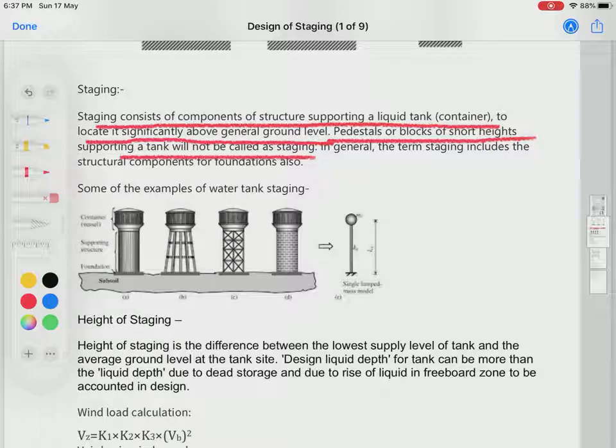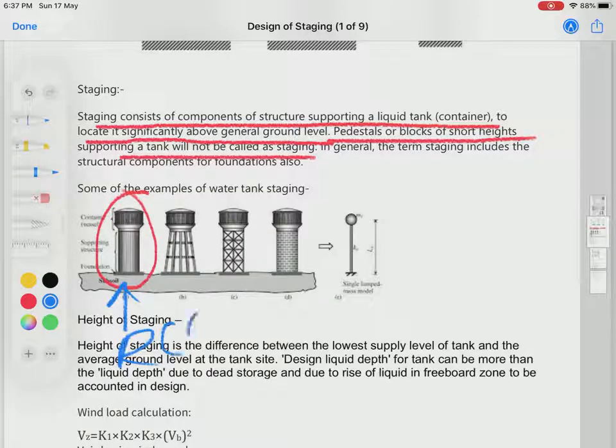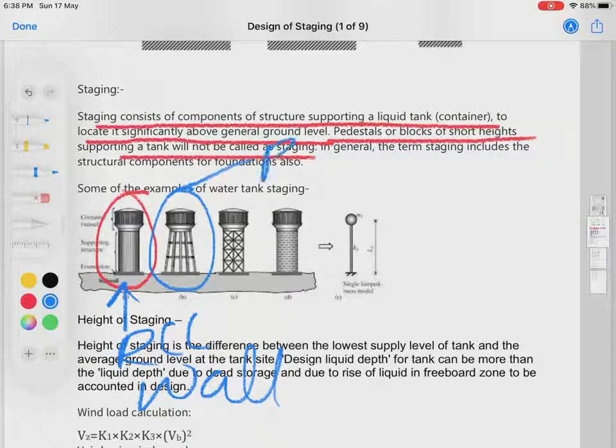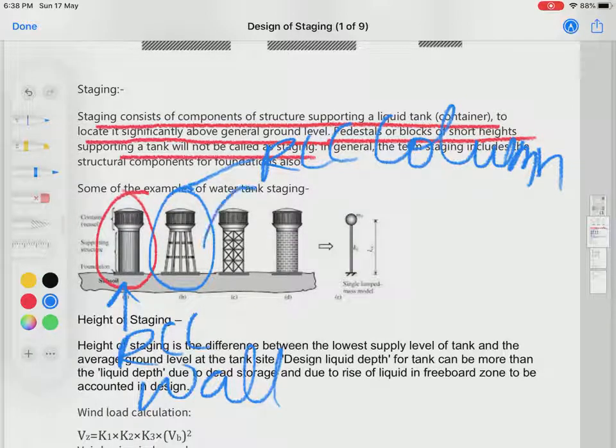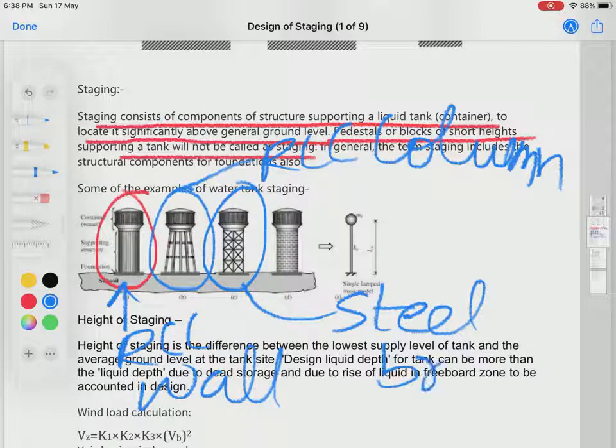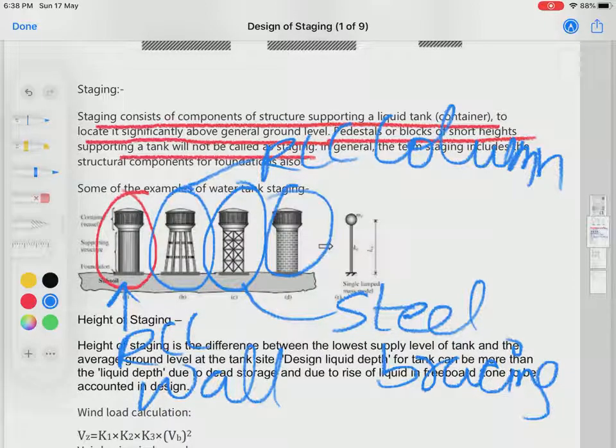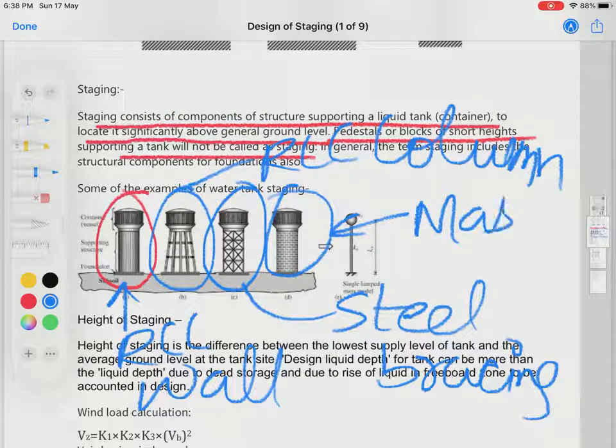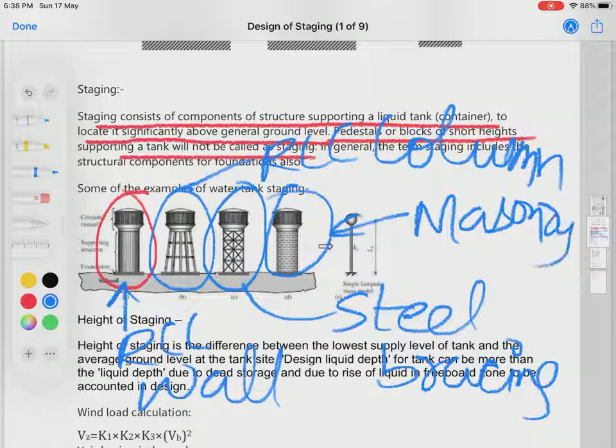Here are some examples of staging. The first one is complete RCC wall water staging. This one is RCC columns—RCC column water tank staging. This one involves steel bracing, and the last one involves the design of masonry staging.